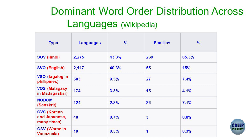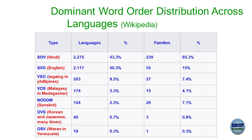It is very interesting that almost 90% of the languages in the world keep the subject before the object. Hindi is an example of SOV — the verb goes to the end — 43.3% of the world's languages follow this order. SVO is 40%, VSO about 10%. So 90% of languages keep the subject before the object — an intriguing fact. Object-before-subject is seen in Malagasy in Madagascar and in Korean and Japanese. There is a language called Warao in Venezuela which has the OSV structure. The dominant order is subject coming before the object; the verb is typically placed depending on its language family.